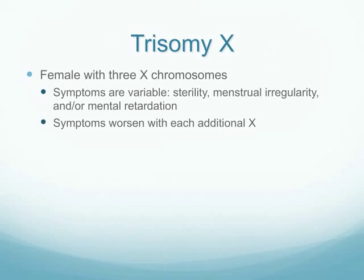Trisomy X is a female with three X chromosomes. This can lead to a variety of symptoms, ranging from relatively asymptomatic to mental retardation with sterility and menstrual irregularities. The symptoms worsen with each additional X chromosome — so having four Xs results in even more severe symptoms.